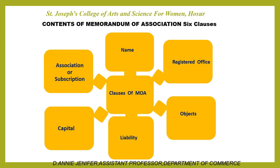Contents of Memorandum of Association — what are its contents? They are: Name, Registered Office, Object, Liability, Capital, and Association or Subscription.